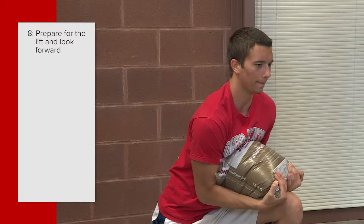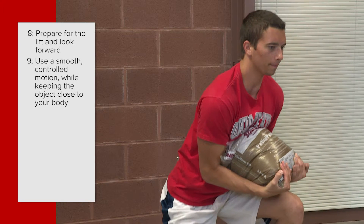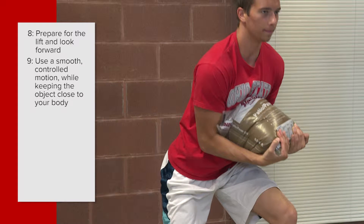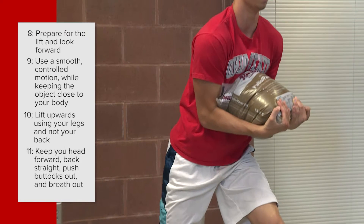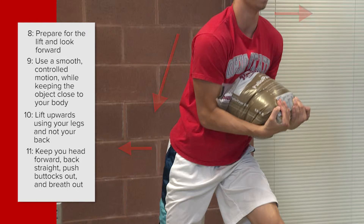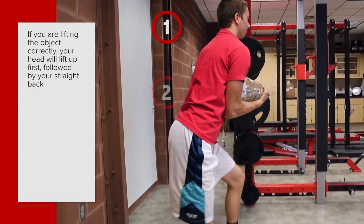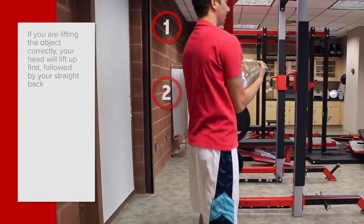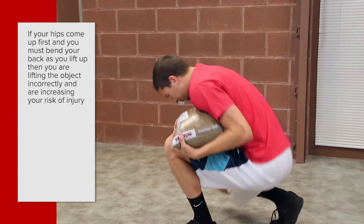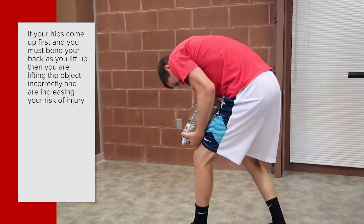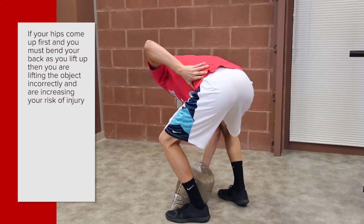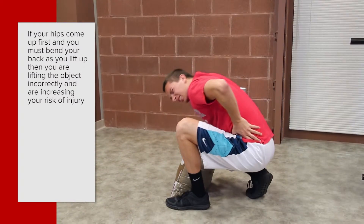Prepare for the lift and look forward. Using a smooth, controlled motion while keeping the object close to your body, lift upwards using your legs and not your back. As you lift up, keep your head forward, your back straight, push your buttocks out, and breathe out. If you are lifting the object correctly, your head will lift up first, followed by your straight back. If your hips come up first and you must bend your back as you lift up, then you are lifting the object incorrectly and are greatly increasing your risk of injury.